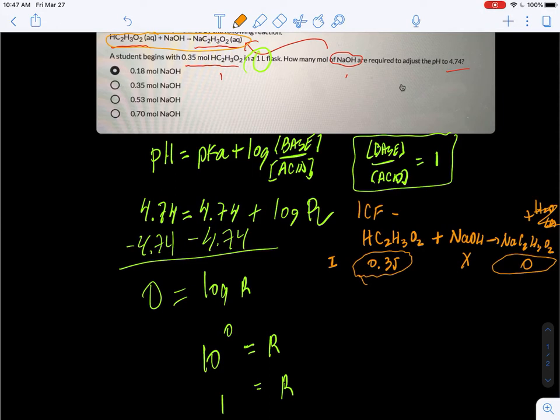We have 0.35 moles of acetic acid, zero moles of sodium acetate, and we're going to add some amount of sodium hydroxide. We're going to have some kind of change, but in the final amount we want this amount to be equal to this amount. For every molecule of acetic acid that goes away, you're going to form one molecule of that, so we need to decrease this by half. If you take 0.35 and divide by two, you get 0.175.